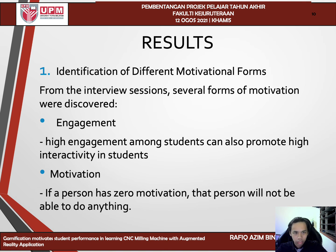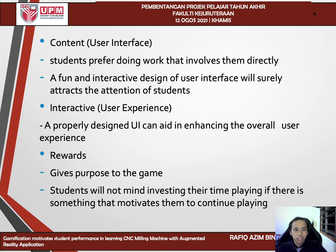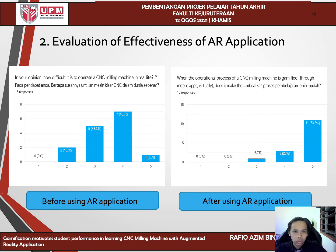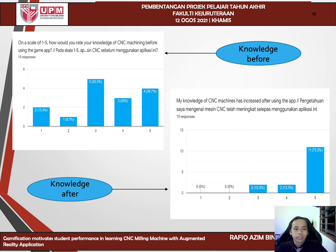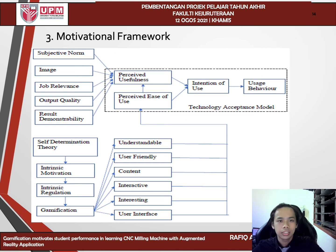Based on the interview, I identified 5 different forms of motivation: engagement, motivation, content, interactive and reward. For the second objective, to evaluate the effectiveness of the AR application, the figures show results before and after respondents used the AR application, including knowledge before and after using the game app. As you can see, the knowledge participants gained after using the game app rose considerably.